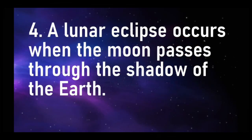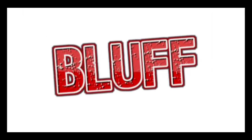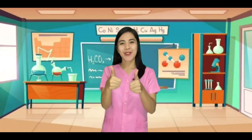Question number four: A lunar eclipse occurs when the moon passes through the shadow of the earth. Is it a fact or a bluff? Great job, that is a fact. And for the last question: Umbra is the region where only one portion of the light source is blocked by the object. Is it a fact or a bluff? Good job, that is a bluff — because the answer is penumbra. Good job, class. You answered our activity very well.